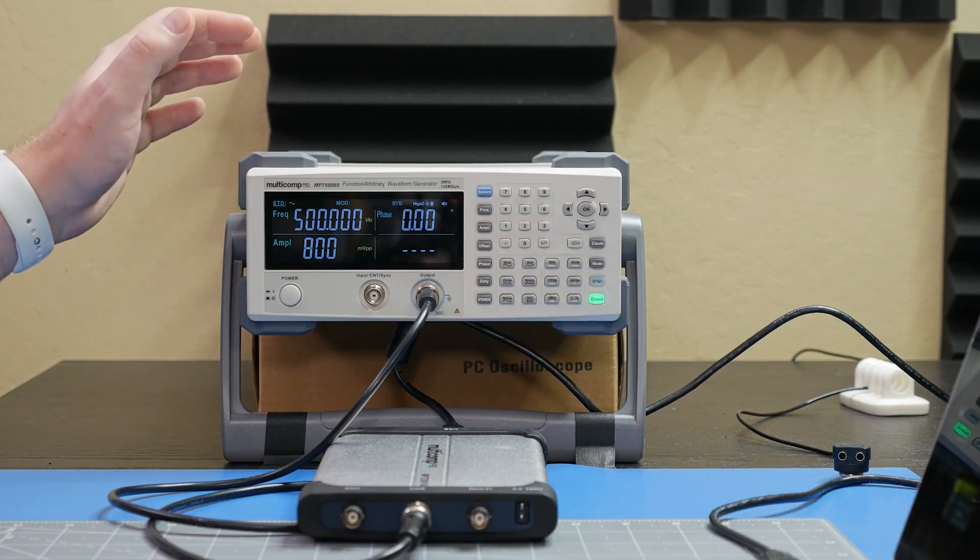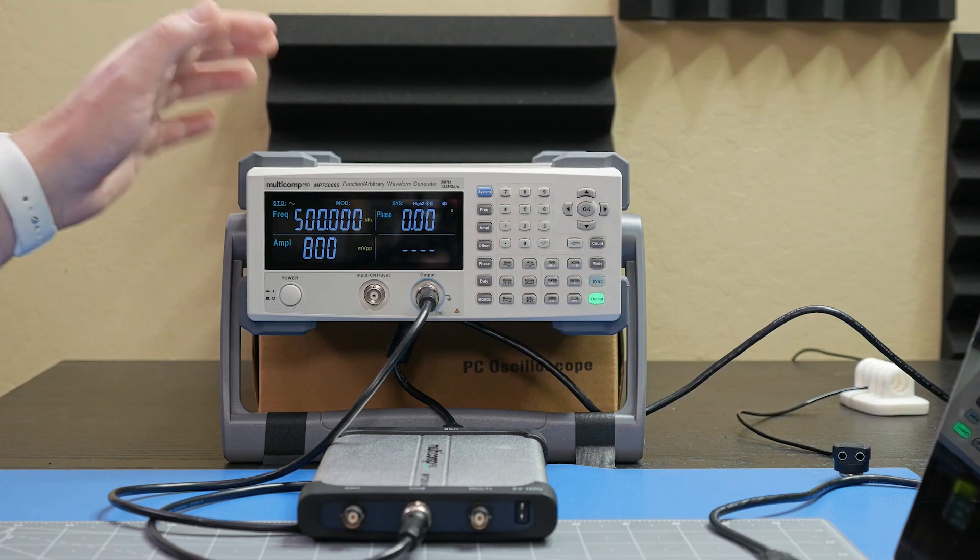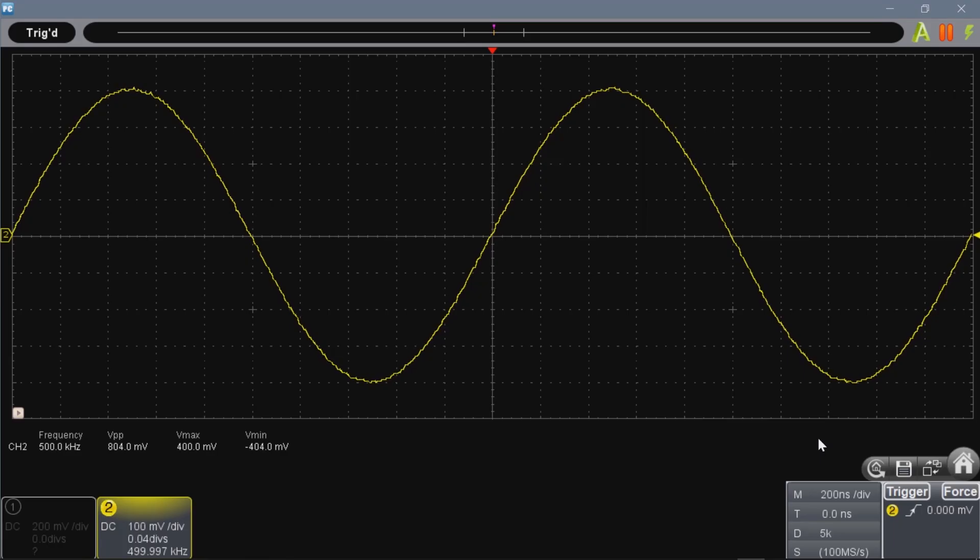Hello and welcome back to Workbench Wednesdays. I'm your host James Lewis. On this show we talk about the equipment found on your electronics workbench. This episode continues our series on instrument basics with function generators. You might also hear these called waveform, signal, or arbitrary generators. Just like Bill and Dave's oscillator from 1938, these instruments output signals with various amplitudes and frequencies.